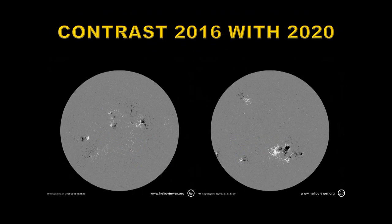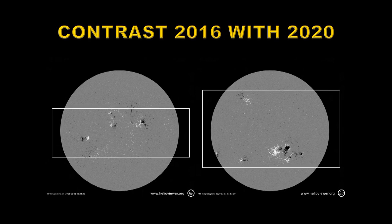Here I have two images of the Sun — one taken on December 1st 2016 on the left, and another taken on December 1st 2020 on the right. There are some fairly obvious differences between the two. First of all, the range of latitudes where there are sunspots. These dark and light areas are magnetic fields corresponding to sunspots. In 2016, during the decay of Solar Cycle 24, the sunspots had concentrated towards the equator, which is quite normal. Now with the outbreak of the new cycle, the sunspots are at much higher latitudes — again, that's perfectly normal.